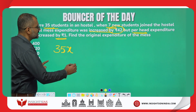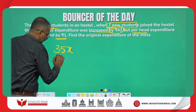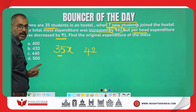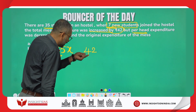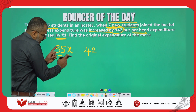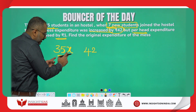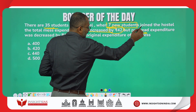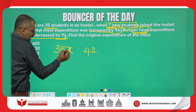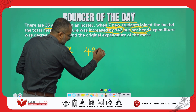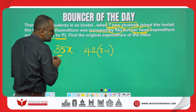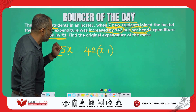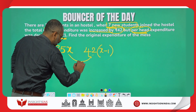Seven new students joined, so now there are 42 students. These 42 students are not paying x rupees each — x was the original per head amount. Because more people were added, everybody's per head expenditure decreased by 1 rupee, so each now pays (x − 1). Compared to the two bills, the new bill is 42 rupees more.